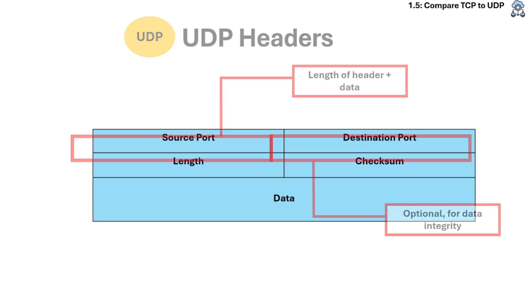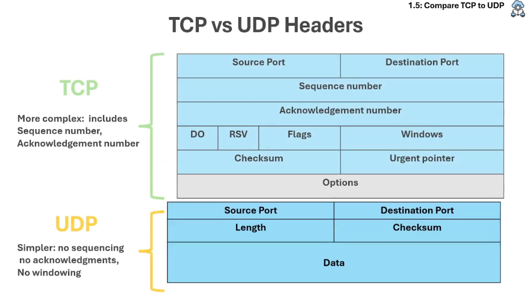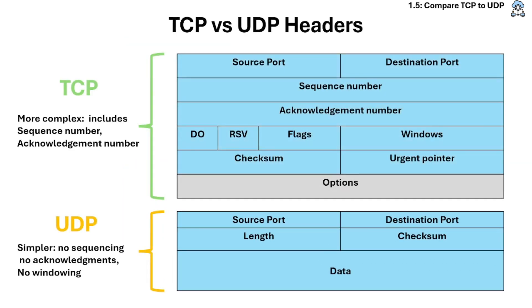To sum it up, TCP is more complex — it includes sequence number, acknowledgement number, and more. UDP is simpler — there's no sequencing, no acknowledgements, and no windowing.